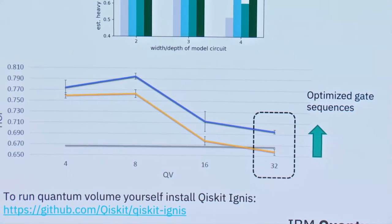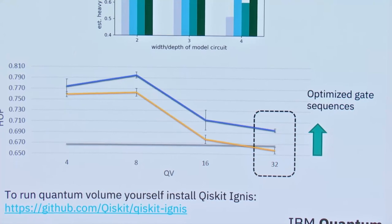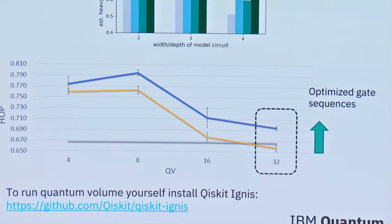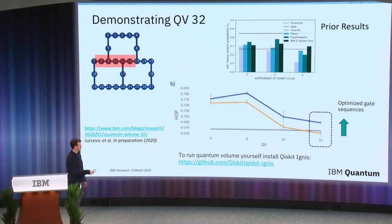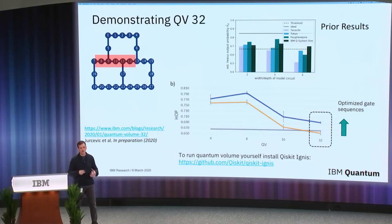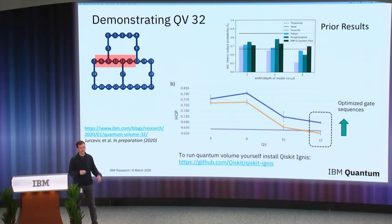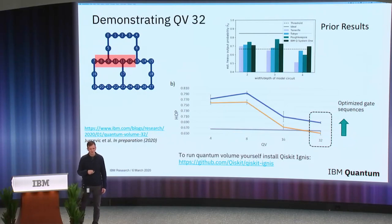I'd like to close on that and just mention: if you want to try quantum volume on your own device, please install Qiskit and check out the Qiskit Ignis package. There's code in there to generate volume circuits, run volume, and fit volume so you can make graphs just like this. Thank you.